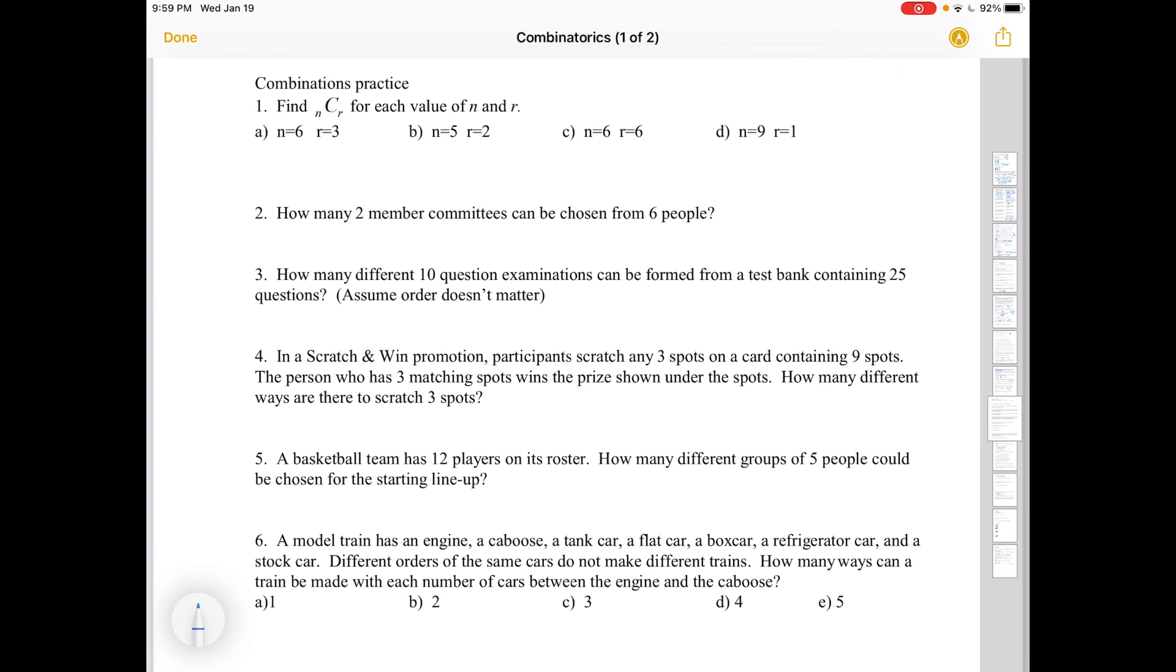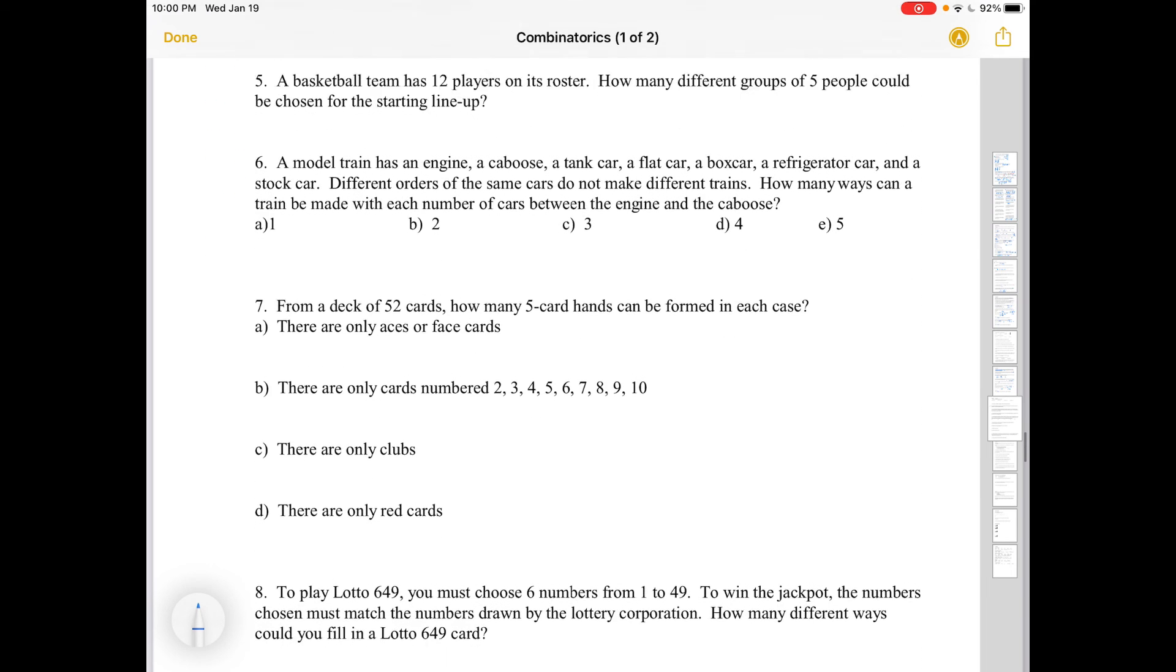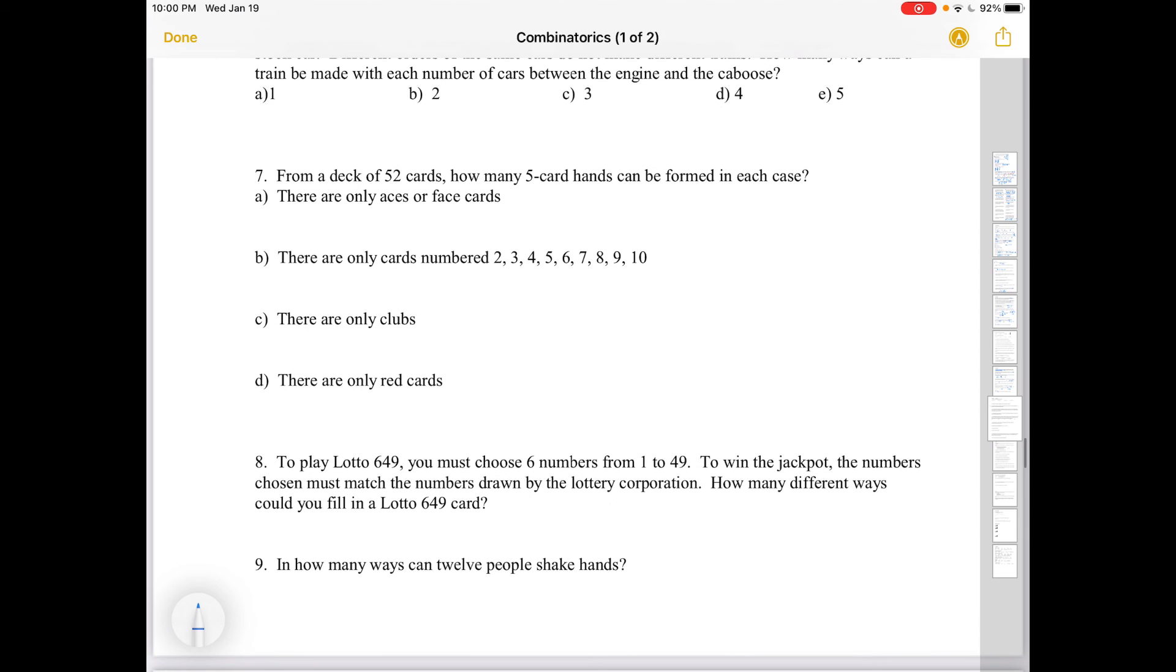Sometimes the decision of whether order matters or not is kind of a personal interpretation. For these questions, let's assume that order doesn't matter, and especially in number three, something like this: how many different 10-question exams can be formed from a test bank using 25 questions? Assume that order doesn't matter here, but you could legitimately say, well, sometimes it does matter. And then in the next video, we will talk about the case where we have to distinguish whether order matters or not, whether we have a permutation or combination.